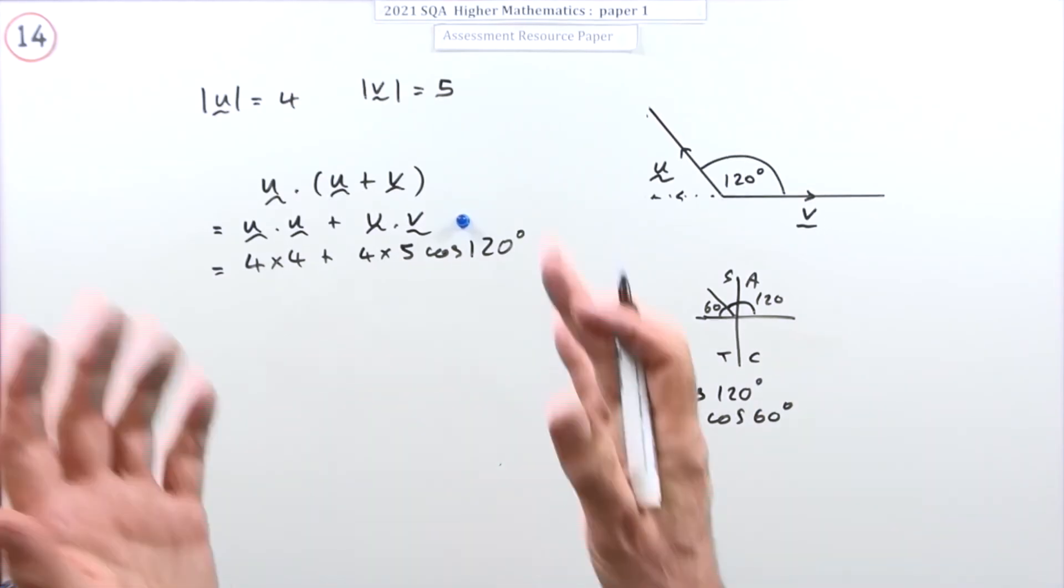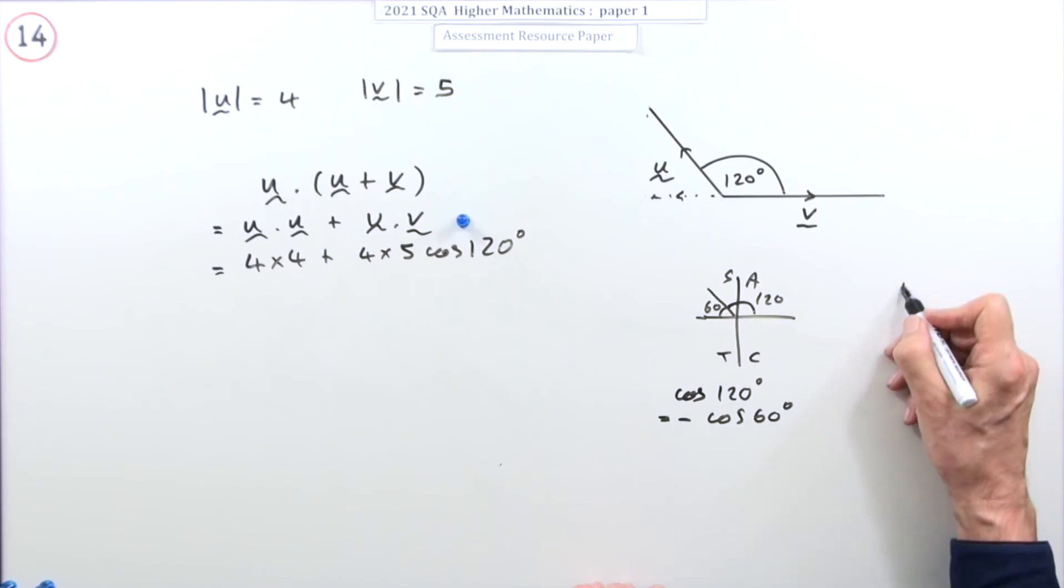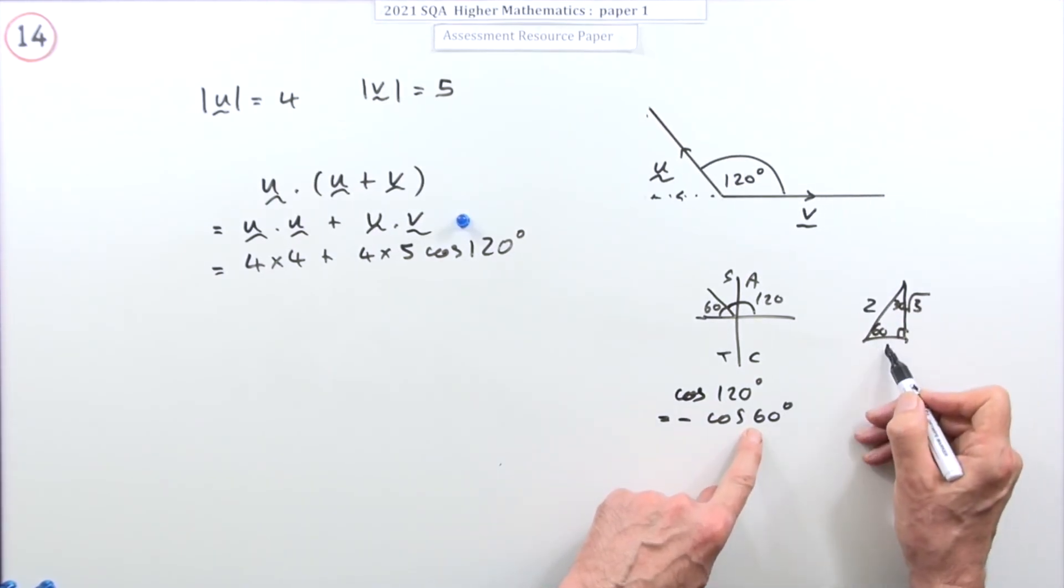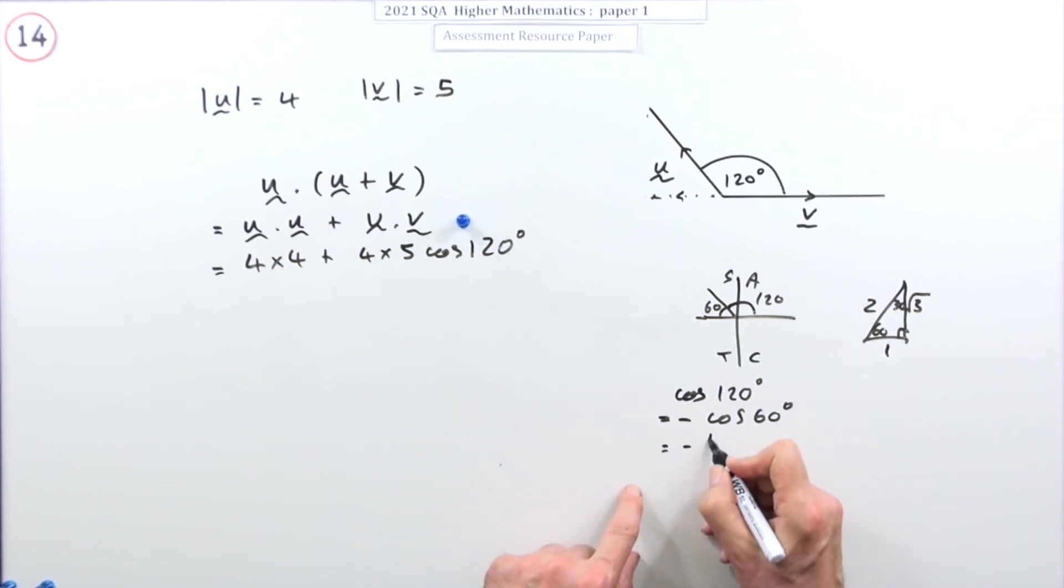Now what's cos 60°? Well you've either remembered it or we've got another big diagram. Let's put the big triangle down, the 60-30 triangle: 1, 2, root 3. So the cos of 60°, the adjacent is 1 upon 2. So that's negative a half. So that's what I'm going to pop in here.